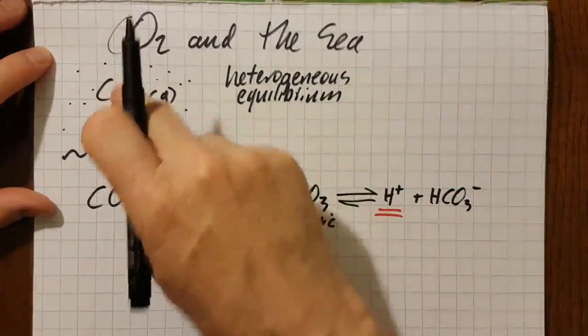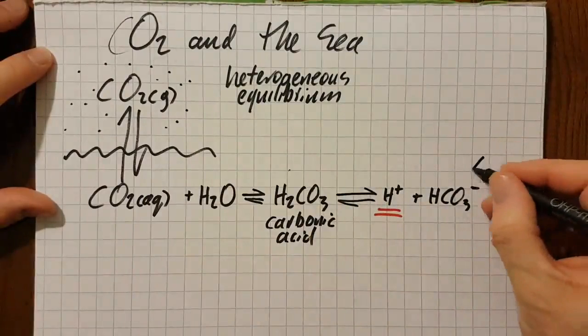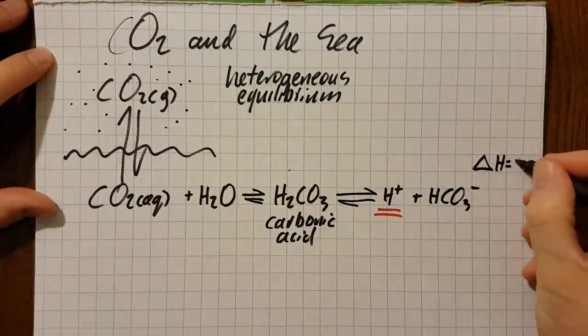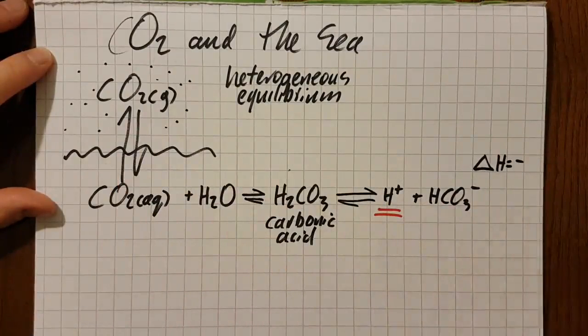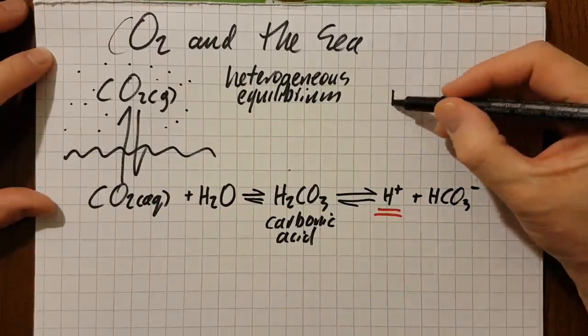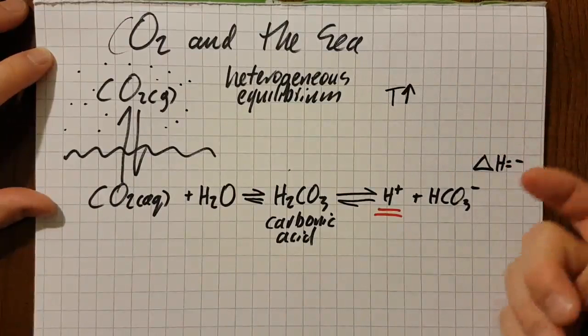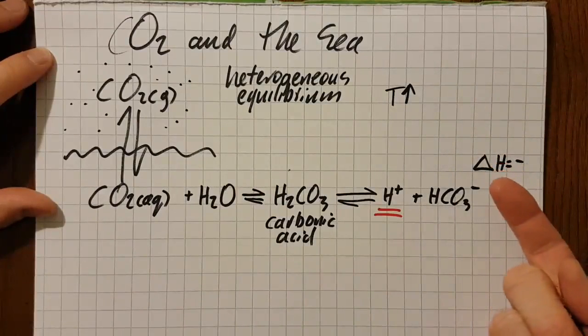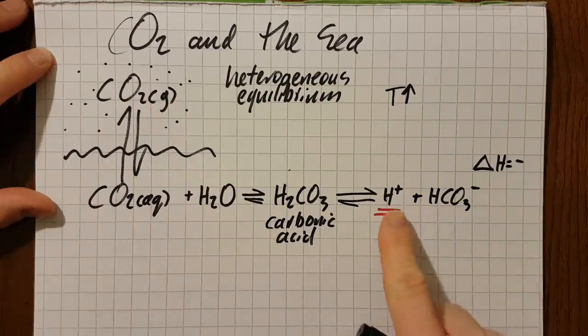Now there are two processes at hand here. Overall, this is exothermic. Each of these steps in the forward direction, exothermic. So as the temperature goes up, what's going to happen to these equilibria? They're going to move to the endothermic side. So carbon dioxide is pressing the equilibria to go that way to make acid.